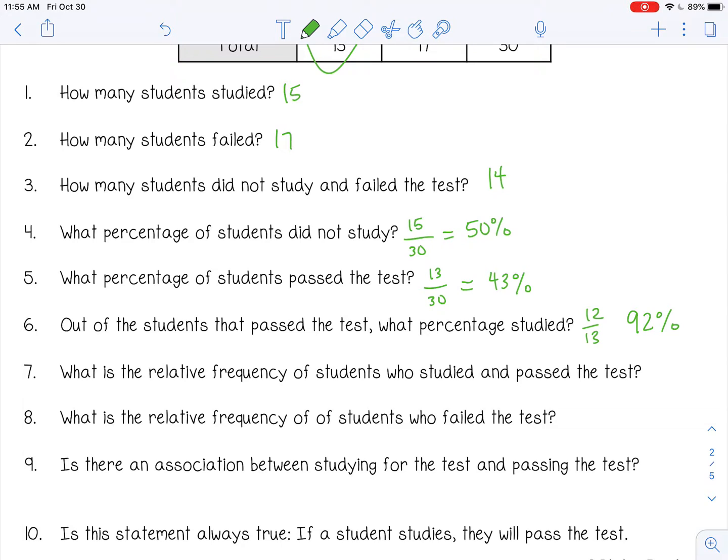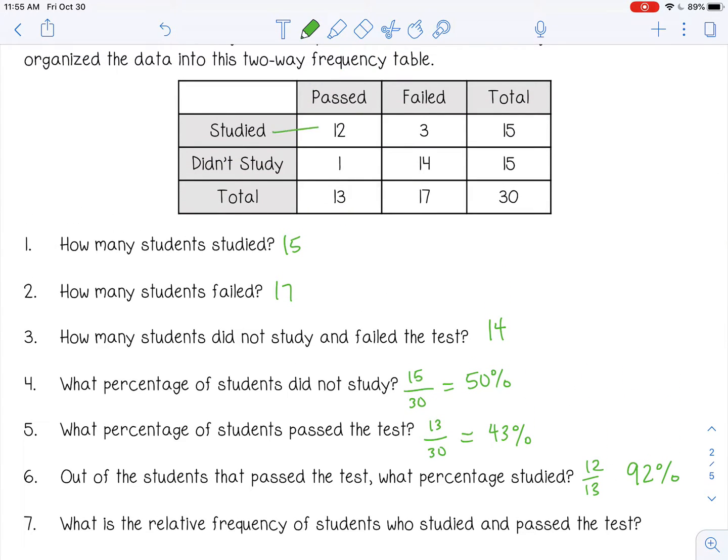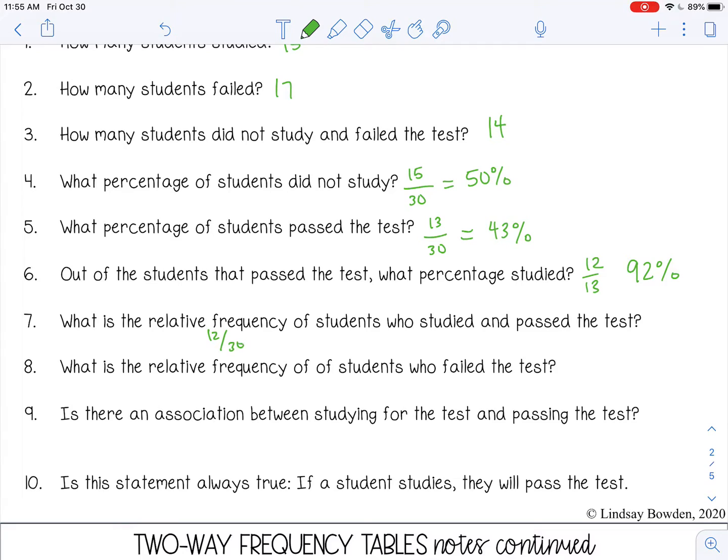What is the relative frequency of students who studied and passed the test? Relative frequency is just another way to say, what is the percentage of students who studied and passed the test? Studied and passed, that would be 12 out of 30. Now you can leave that as a fraction, but you must reduce it, so that's going to reduce to two fifths. You can change it to a decimal, so two divided by five, that's 0.4. Or you can write it as a percentage, so move the decimal twice to the right, 40%. Relative frequency can be written in any of those forms, so make sure you know how to write it in all three as a fraction, decimal, or a percentage.